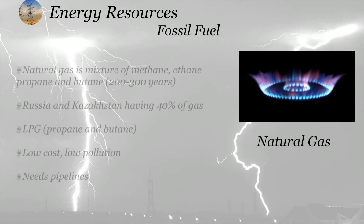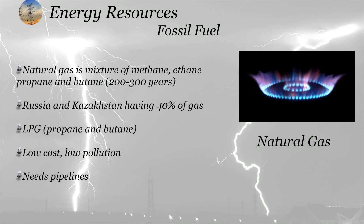Natural gas is a mixture of methane, ethane, propane, and butane. It is supplied in the form of LPG (Liquefied Petroleum Gas) or CNG (Compressed Natural Gas). Russia and Kazakhstan hold almost 40% of gas reservoirs. LPG consists mainly of propane and butane; it has low cost and low pollution, but sometimes requires pipelines or heavy cylinders.